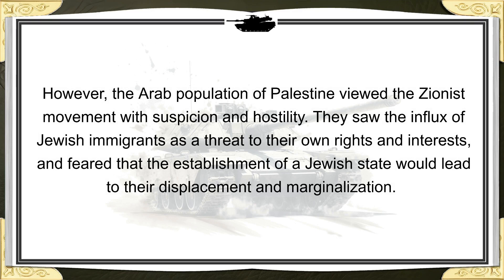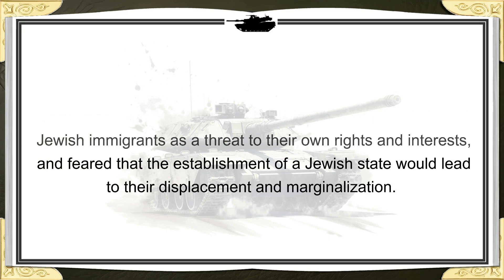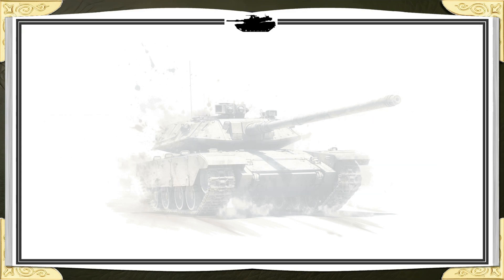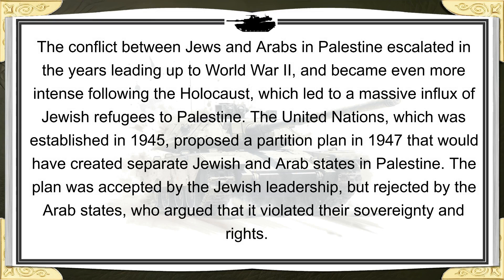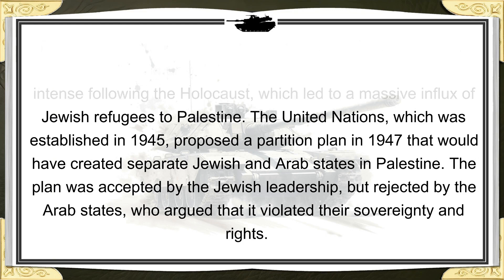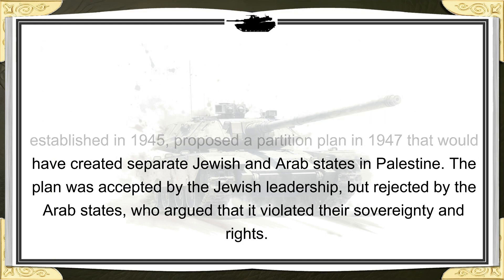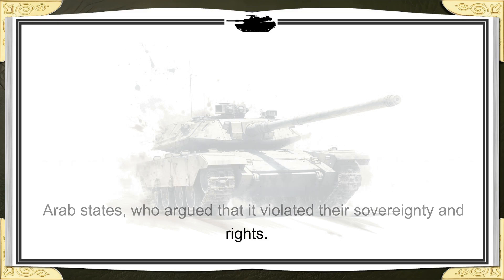They saw the influx of Jewish immigrants as a threat to their own rights and interests and feared that the establishment of a Jewish state would lead to their displacement and marginalization. The conflict between Jews and Arabs in Palestine escalated in the years leading up to World War II and became even more intense following the Holocaust, which led to a massive influx of Jewish refugees to Palestine. The United Nations proposed a partition plan in 1947 that would have created separate Jewish and Arab states in Palestine. The plan was accepted by the Jewish leadership, but rejected by the Arab states, who argued that it violated their sovereignty and rights.